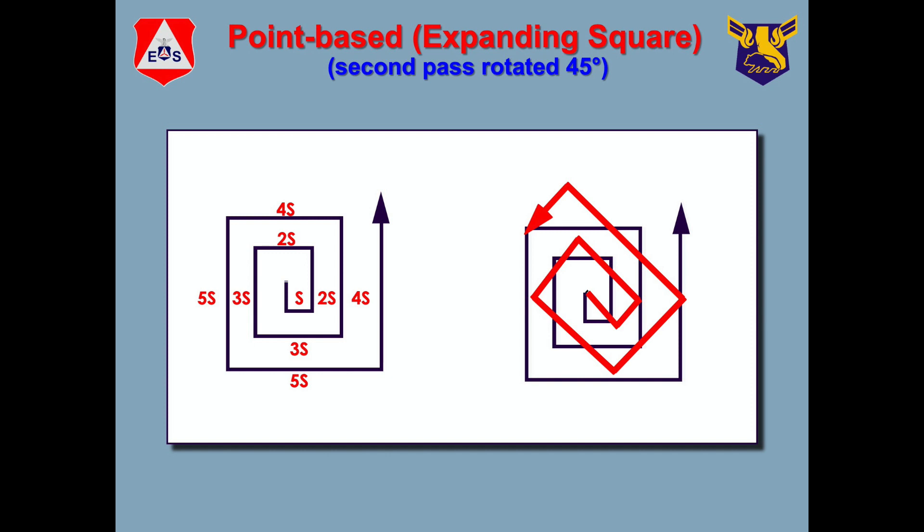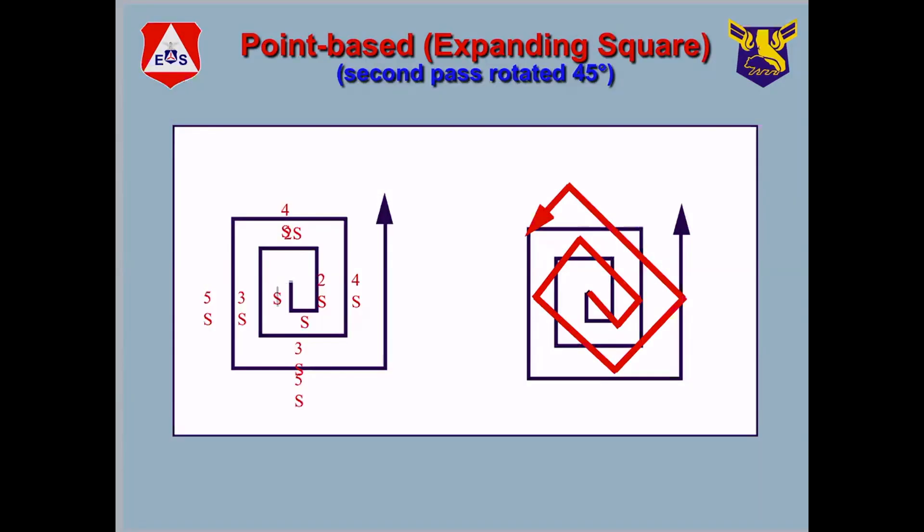Basically, you start at your point, and whatever your S is, whatever your search range is, you would fly for that length of time. So a half mile, you'd go a half mile south initially. And then you'd go a half mile to the east. And then you would double that, and instead of a half mile, you'd go two times a half, or one mile. And one mile. And then a mile and a half, mile and a half, two miles, two miles. Are you starting to see a pattern here?